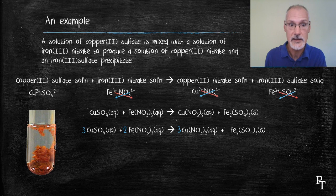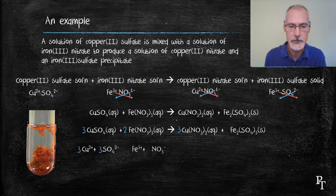Let's proceed now to the ionic and then the net ionic equation. Copper sulfate would break into 2 ions, copper and sulfates. The coefficient of 3 out in front would then give me this. Iron nitrate breaks down into iron and nitrates.